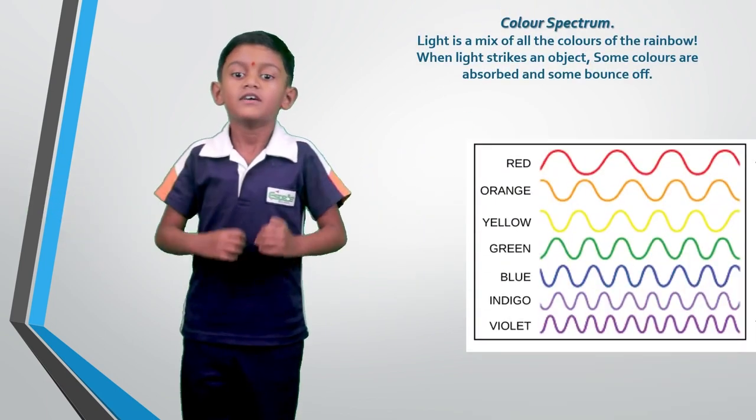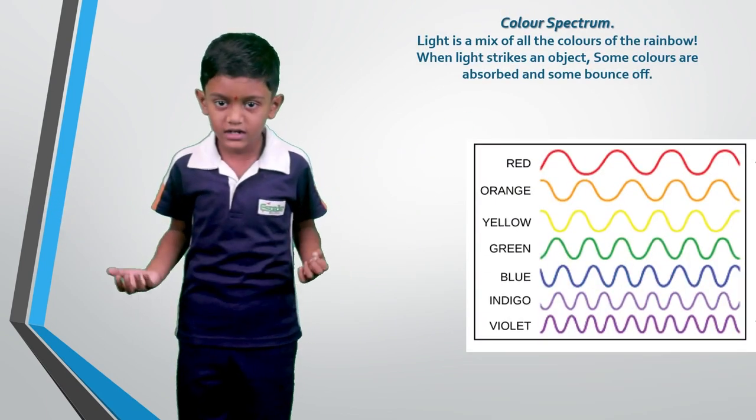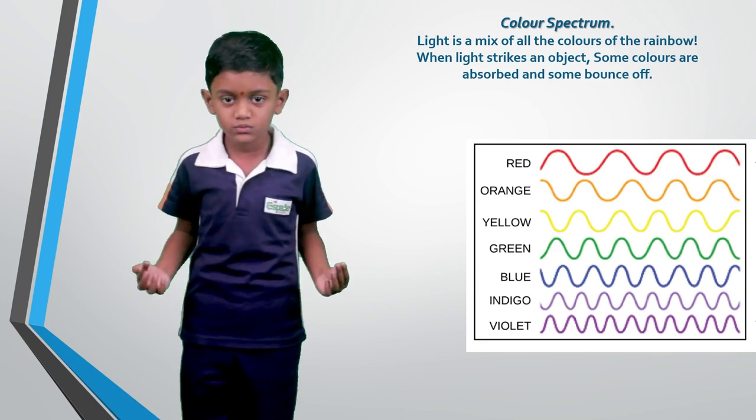White color is a mixture of all the colors we see in a rainbow. It is visible as a continuous spectrum from red to violet.